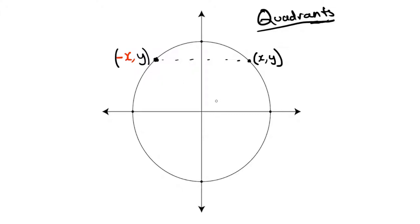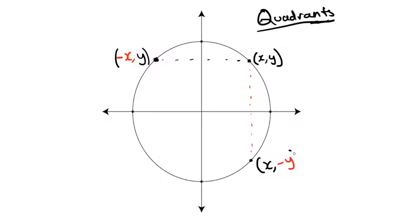So that reflected point becomes negative x comma y. Now, what would happen if we reflected across the x-axis instead? If we reflect across the x-axis, then our y-coordinate is going to be negative, while the x stays the same because it's on the same side of the y-axis.